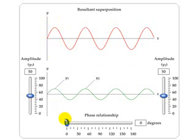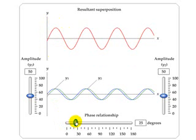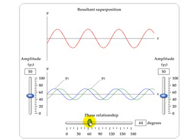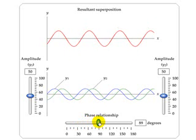If I start to move them so that they are out of phase, we can watch the top of the graph and see that the resultant of these two waves, when they're added together, starts to change. It gets smaller and smaller.